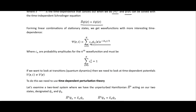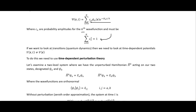We end up with these linear combinations where we have this c sub n term, which is the probability amplitude for the nth wave function. These probability amplitudes, when squared and summed, must equal one — you can't have a probability greater than one or less than one, because you have to account for all possible states.